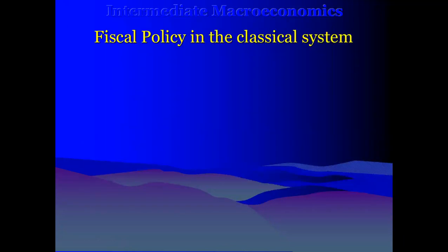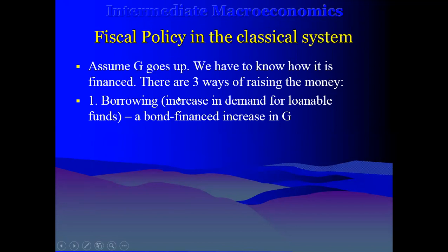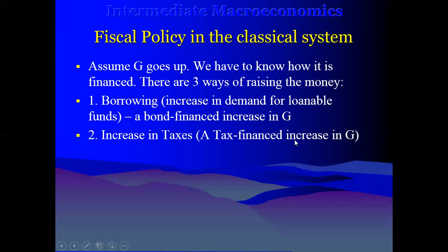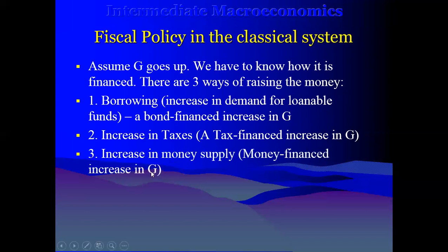Now we want to look at fiscal policy, assuming there's an increase in government expenditure. Whenever there's a government deficit, there are ways this deficit can be financed: through borrowing — that's a bond-financed government deficit — through an increase in tax — a tax-financed government deficit — or through printing of money, which we call the money-financed deficit.